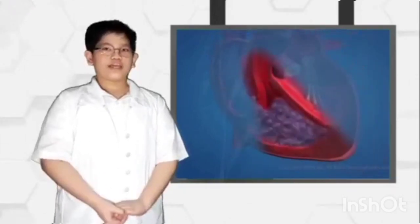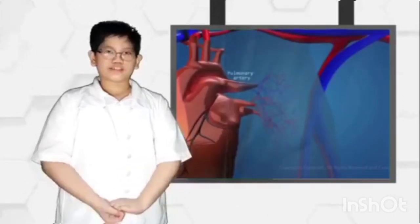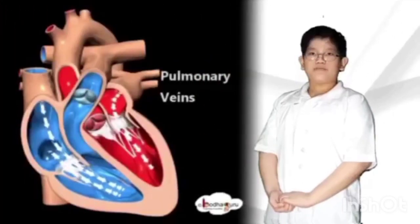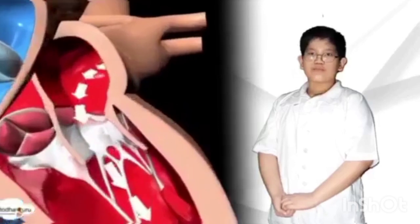Note that oxygen-poor or carbon dioxide containing blood goes through the pulmonary artery and to the lungs where the carbon dioxide is exchanged for oxygen. The pulmonary vein empties oxygen-rich blood from the lungs into the left atrium of the heart.